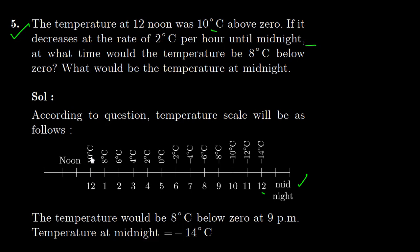तो 12 noon पर 10 degree था और हर 1 hour में 2 degree कम होता जा रहा था. अब हम देखेंगे — यह बनेगा 8 degree, यह बनेगा 6 degree centigrade, इसमें भी 2 कम करो 4, और 2 कम करो 2, फिर 2 कम करो 0.